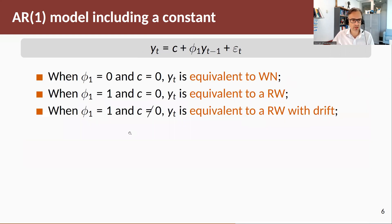Let's look more in depth at the AR1 model including a constant. If phi_1 equals 0 and c equals 0, we have white noise. If phi_1 equals 1 and c equals 0, we have a random walk. If phi_1 equals 1 and c is non-zero, then we have a random walk with drift.